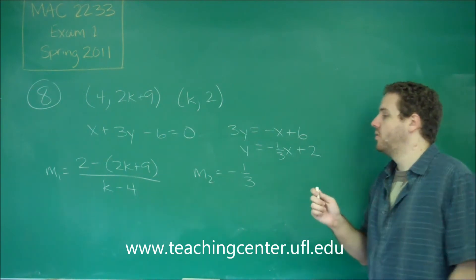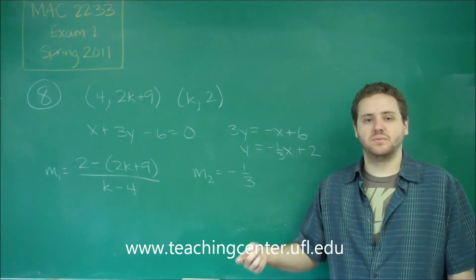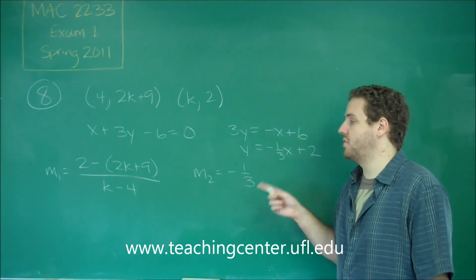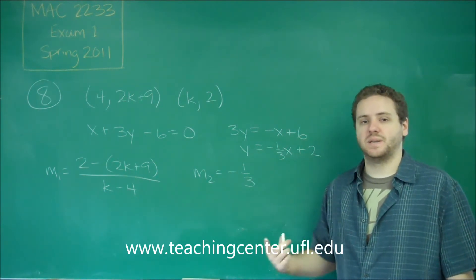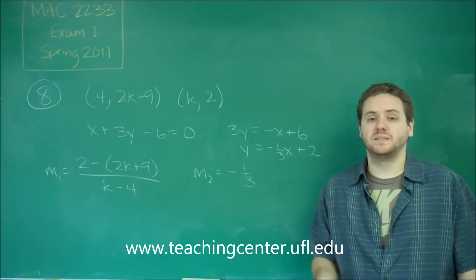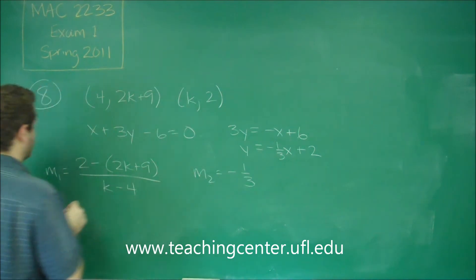So now we need to figure out what M1 is. We know they're perpendicular, and that means these slopes have to have opposite reciprocal values. So if M2 is -1/3, M1 needs to be the negative reciprocal of that. The negative reciprocal of -1/3 would be positive 3. So we know that this has to equal 3. Now we can just solve for K algebraically.